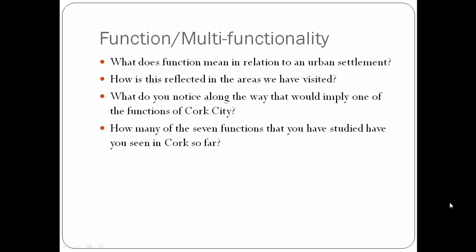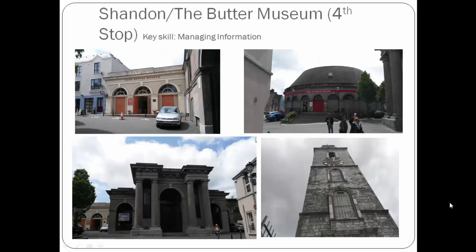The questions will also keep students busy as the next stop is quite a trek up to Shandon and the Butter Museum, our fourth stop. Here, students will take the tour and learn about one of the historical functions of Cork City. They will also learn how the cityscape developed in the wake of the butter industry, and how the hinterland was affected by the butter trade. Students will be tasked with writing a short history of the butter trade as they go along the tour, with the key skill of managing information and thinking in mind.